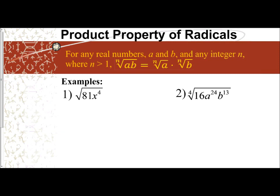Now we've dealt with this product property of radicals before when we were simplifying square roots and simplifying nth roots. It says that for any real numbers a and b and any integer n where n is greater than 1, if you have the nth root of the product ab, you can split it into the nth root of a times the nth root of b. We use this concept when we are simplifying radicals, so it's not brand new. We're just going to be practicing it to improve our skills.